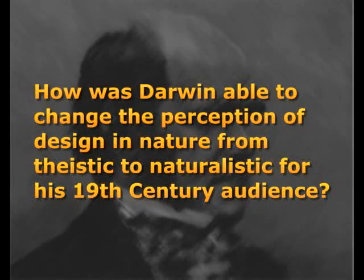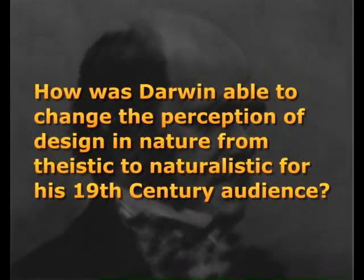How was Darwin able to change the perception of design in nature from theistic to naturalistic for his 19th century audience? A very interesting question is how Darwin was able to accomplish this technically — that is to say, how can you take an audience accustomed to the argument from design, raised on it, and present them a world that is the product of what we might conventionally call chance, where there really isn't a design, and organic structure is the result of a mind-boggling number of contingencies, none of which were planned from the outset.